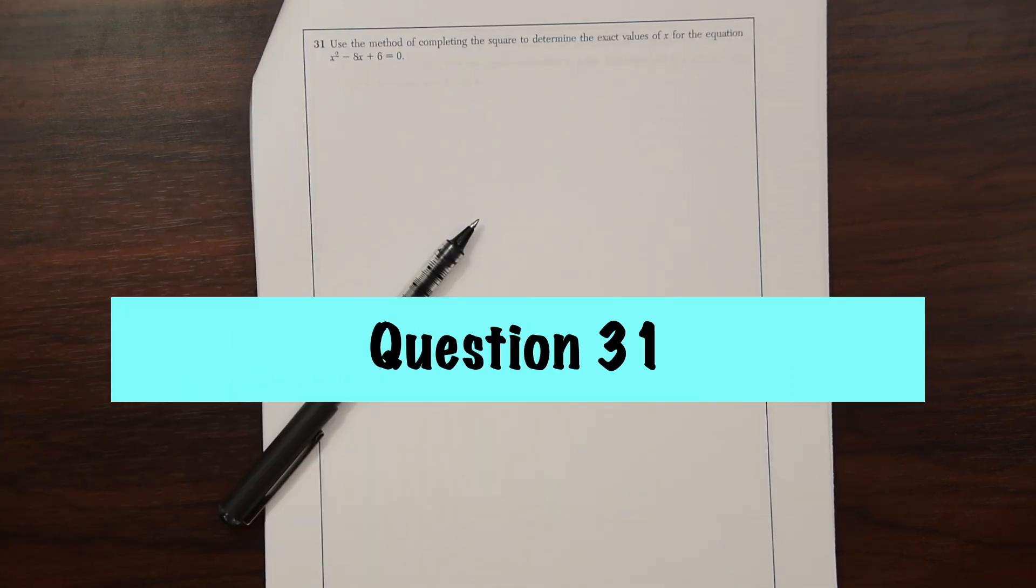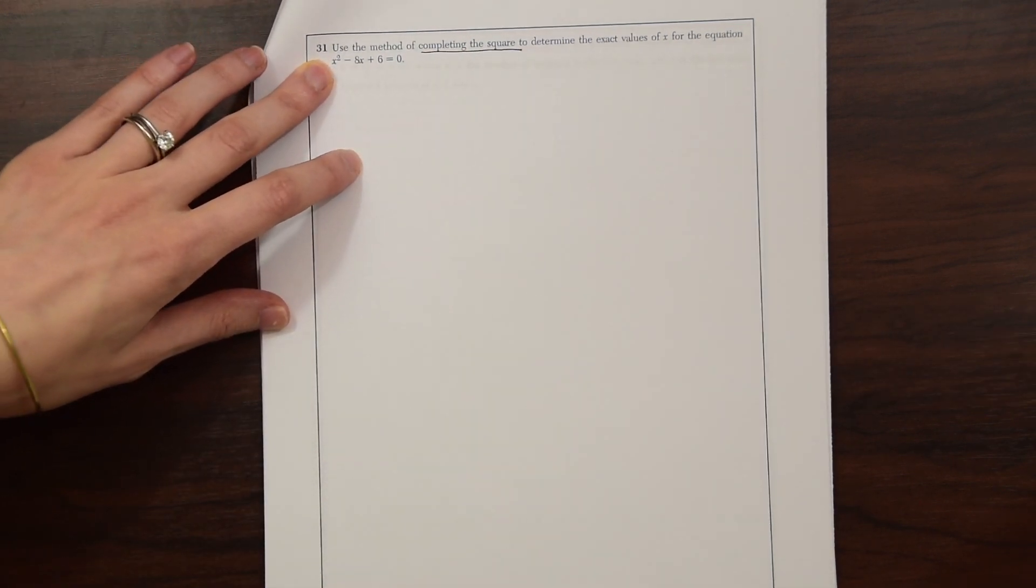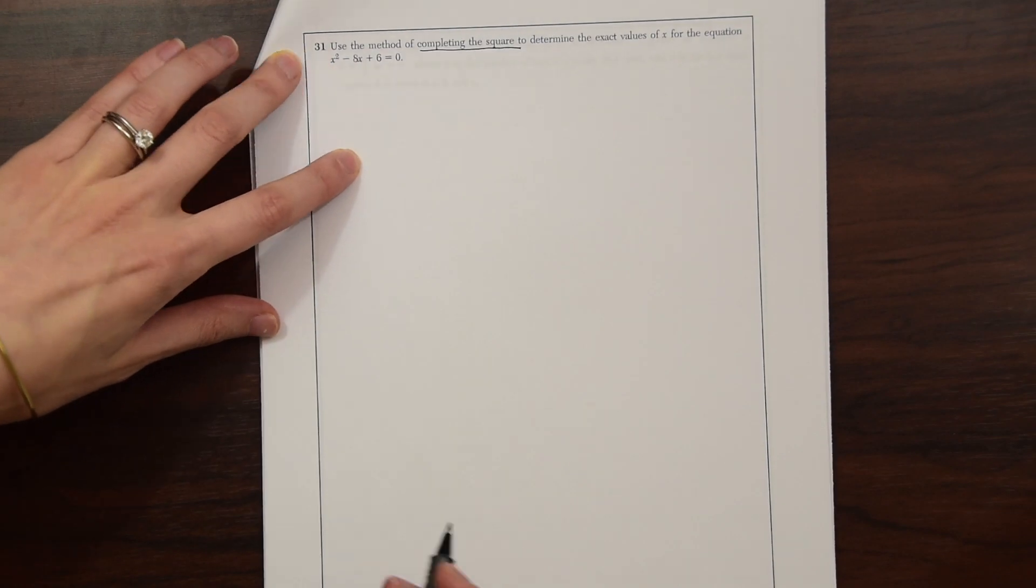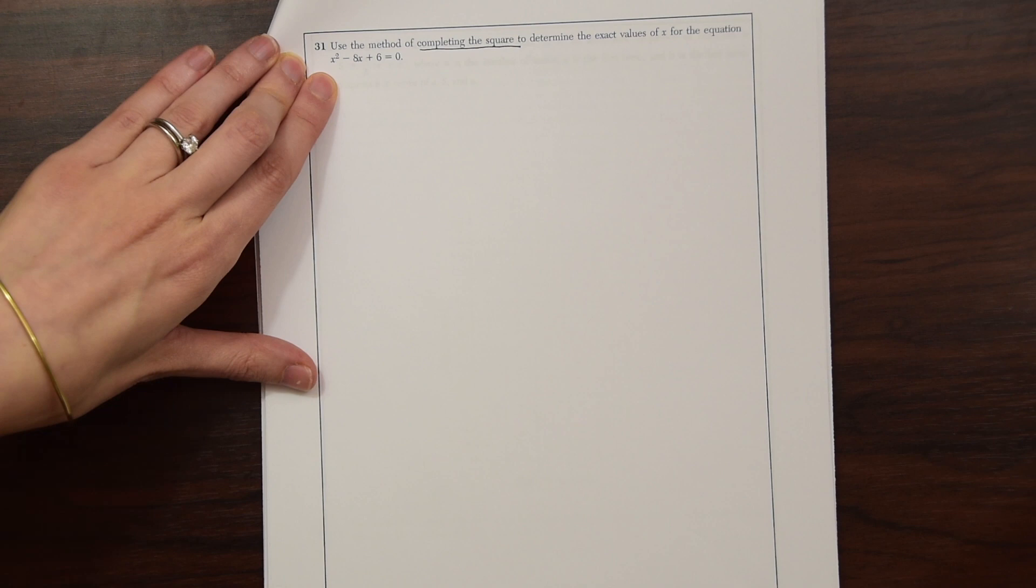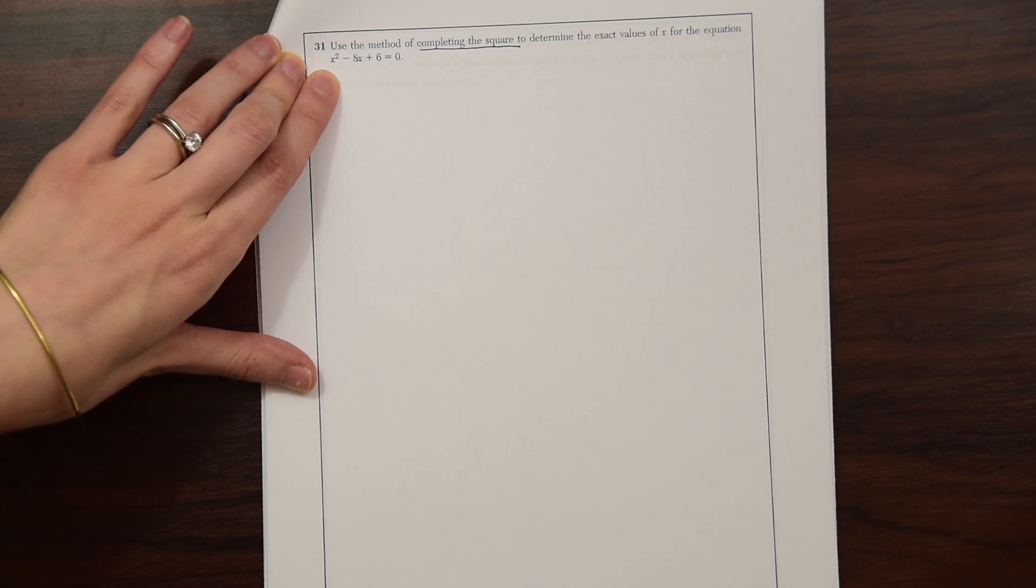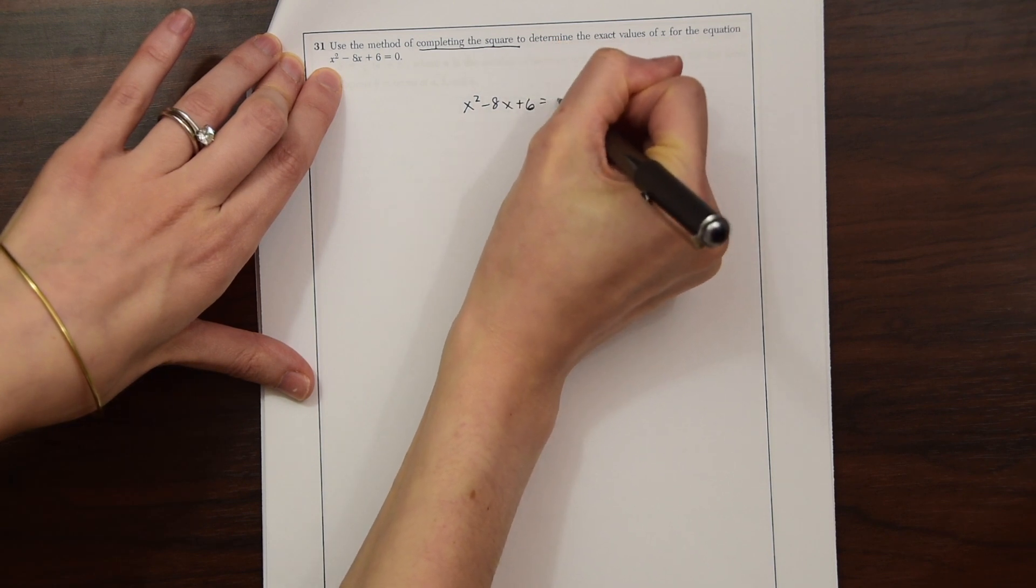So here is question 31. Use the method of completing the square to determine the exact values of x for the equation x squared minus 8x plus 6. So completing the square, we know this. I have a video on this if you don't know this. So let's just write this out. x squared minus 8x plus 6 equals 0.